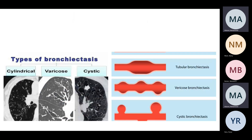Types of bronchiectasis relate to the shape of the airway. It could be cylindric, varicose, or cystic, as seen in imaging.